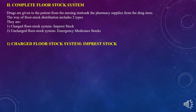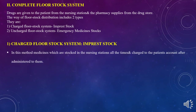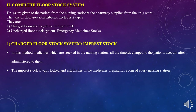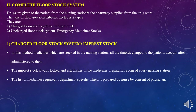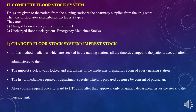In the charged floor stock or impressed stock system, medicines are stocked at the nursing station at all times and charged to the patient after administration. The impressed stock is always established in the medicine preparation room of every nursing station. The list of medicines required is department-specific and is prepared by a group of nurses and physicians. After physician consent, a request is placed to the Drug Therapeutic Committee, and only after their approval does the pharmacy issue stock to the nursing unit.